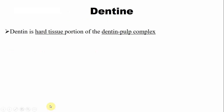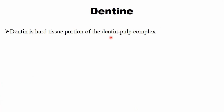Dentine is a hard tissue portion of the dentine pulp complex. We call it the dentine pulp complex because during tooth development the dental papilla cells differentiate into odontoblasts, and those odontoblasts form the dentine, while the dental papilla becomes the dental pulp. Embryologically both dentine and pulp are interrelated, sharing the same origin — that's why we call it the dentine pulp complex.